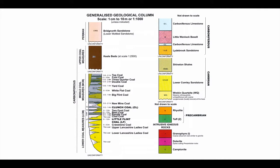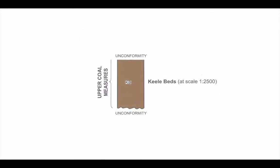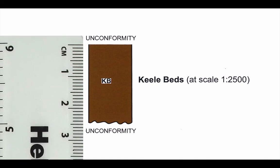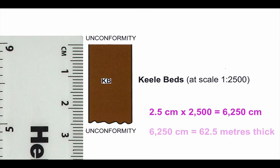Looking at other features shown on the geological column, particularly bed thickness, which is another key piece of information. Looking at the keel beds from the upper coal measures of the Carboniferous, we can see these are drawn to a scale of 1 to 2,500. If we measure the thickness of the bed shown in the key, it's about 2.5 centimetres. At that scale, 2.5 centimetres gives a thickness of 6,250 centimetres — or 62.5 metres thick. So we can use the scale to work out how thick these beds are in this area.